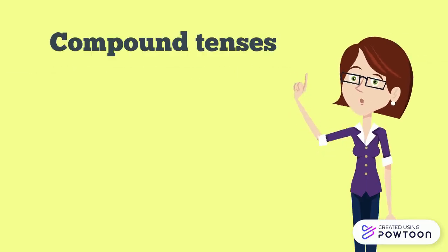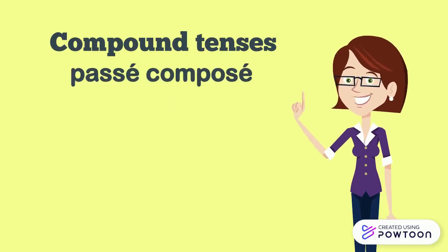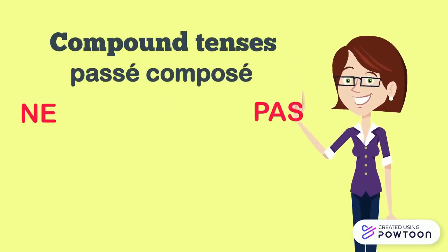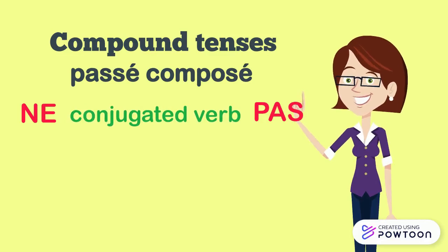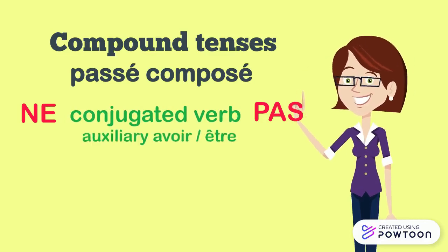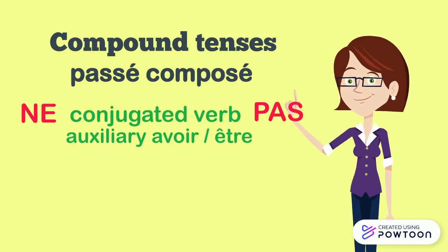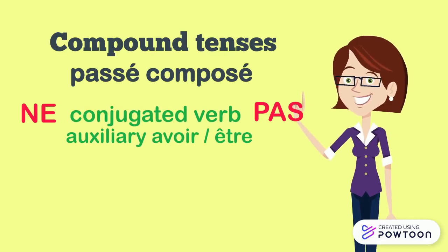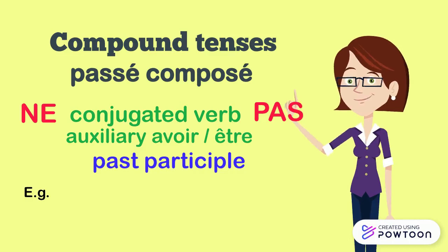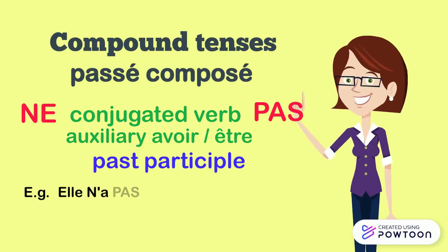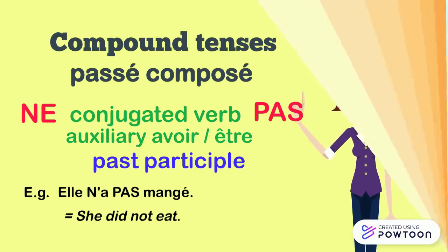In compound tenses, such as the passé composé, the negative words keep surrounding the conjugated verb. In other words, ne stands before the auxiliary avoir or être, and pas stands between the auxiliary and the past participle. For instance, elle n'a pas mangé — she did not eat.